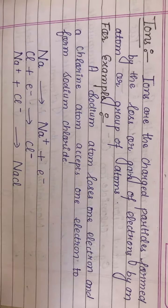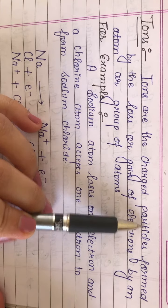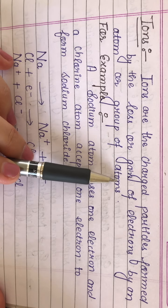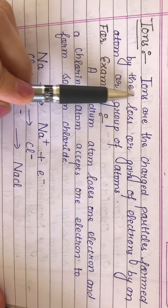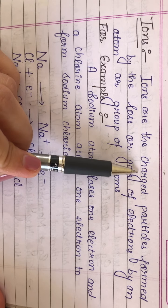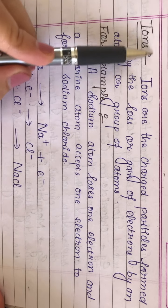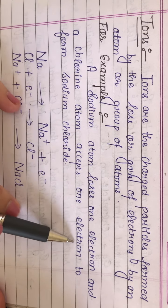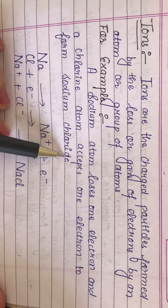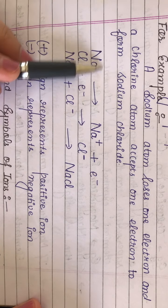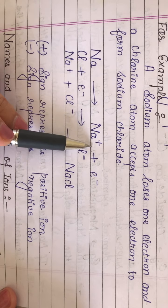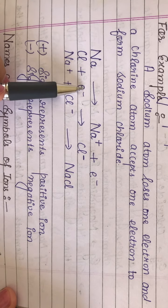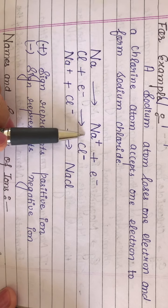What do you mean by ions? Ions are the charged particles formed by the loss or gain of electrons by an atom or group of atoms. Ions are formed when an atom loses or gains electrons. For example, a sodium atom loses one electron and a chlorine atom accepts one electron to form sodium chloride. Sodium loses one electron and forms Na⁺. Chlorine gains one electron and forms Cl⁻, which is the chloride ion.